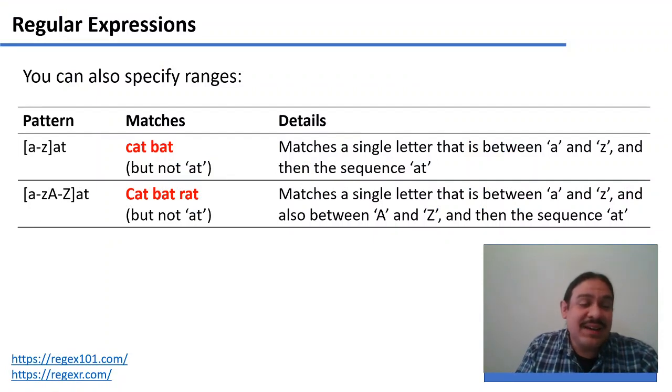We can specify ranges that are longer. For example, we can tell the computer to give us everything in the lowercase A to Z, and in the uppercase A to Z, so that it can find cat, bat, and rat, no matter if they're lowercase or uppercase.